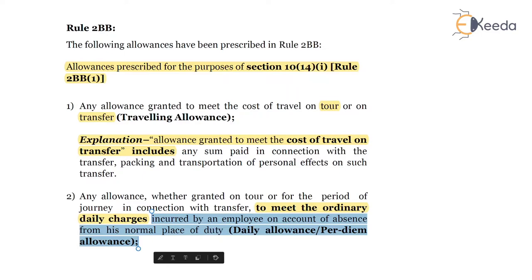As far as daily expenses are concerned, whether on tour or on transfer, the employee is bound to incur expenses on accommodation, traveling, and daily consumption such as lunch and dinner. If on tour, he will reside in a hotel; if on transfer for a long-term period, it will be residential accommodation. These are the sorts of expenses bound to be incurred on a daily basis, and as per section 10(14)(1) clause 2 of rule 2BB, these are covered as daily allowance or per diem allowance.